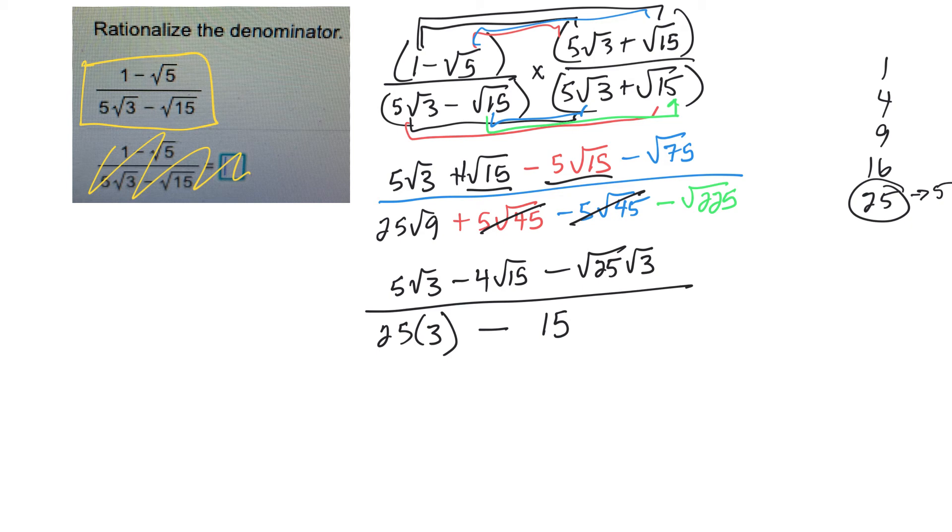Back up to the top. Let's see where we're at. So I have 5 root 3 minus 4 root 15 minus 5 root 3. All over, 25 times 3 is 75, minus 15. Still going.